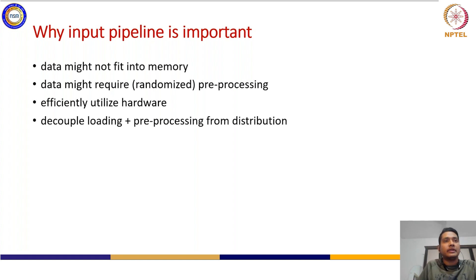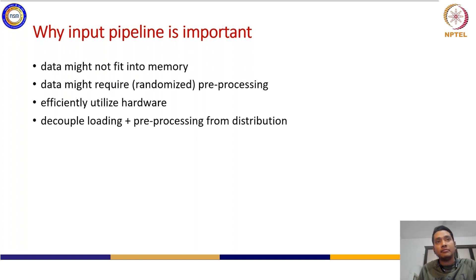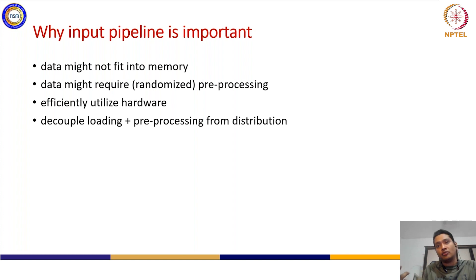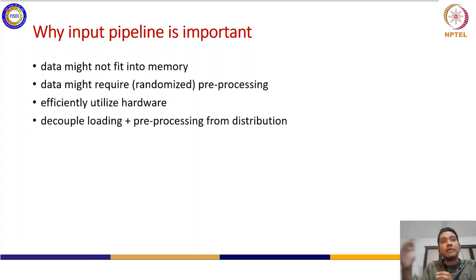If you have one terabyte of data, you do not have the memory to read and process the entire dataset at once. So data might not fit into memory and you have to pipeline. The pipeline stages are: read, open, then load - or read, open, process, load. You can define different stages depending on the requirement and pipeline them together.